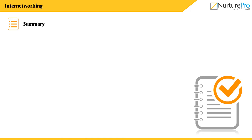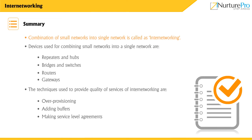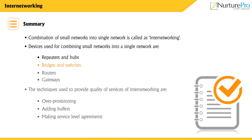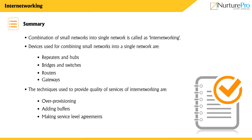Let's have a quick recap on what we discussed. The combination of small networks into a single network is called internetworking. Devices used for combining small networks include repeaters and hubs, bridges and switches, routers, and gateways. The techniques used to provide quality of services of internetworking are over-provisioning, adding buffers, and making service level agreements. Thank you for watching this video.